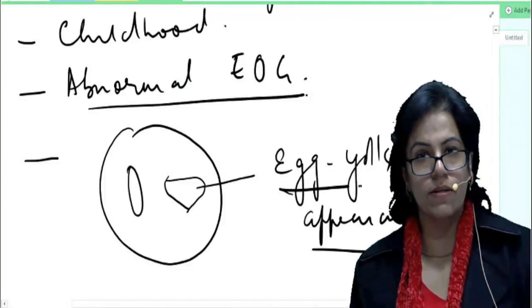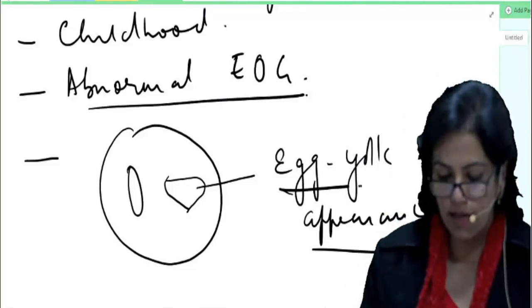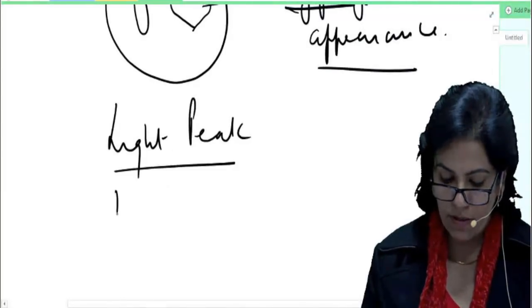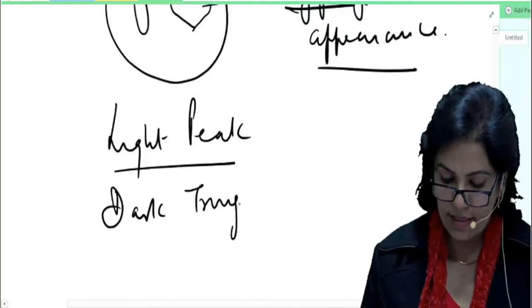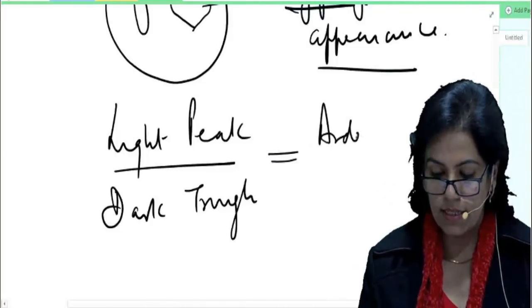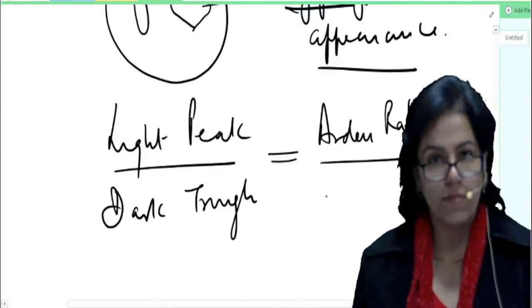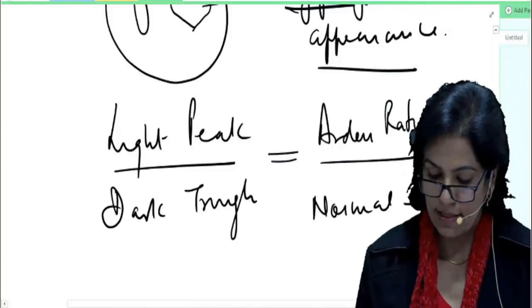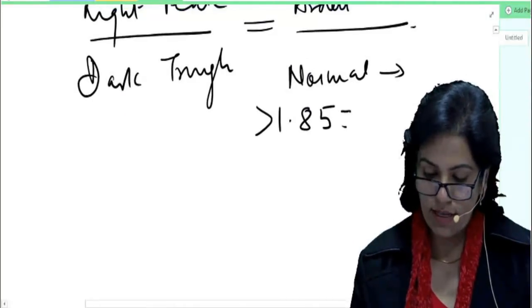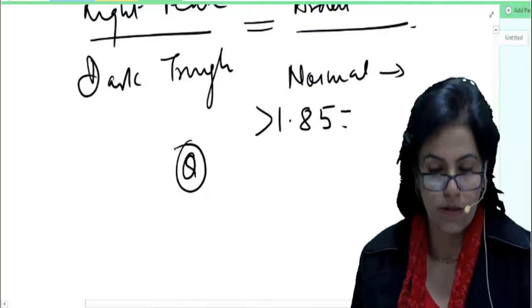And everybody knows what is electrooculogram. We measure the standing potential of the eye, where we take the maximum potential in the light and minimum in the dark. This ratio of light peak upon dark trough—that is lowest in the dark. The ratio of highest in the light and lowest in the dark is what is called Arden ratio. What is the normal value of this Arden ratio? It is more than 1.85. So, this is your exam question.